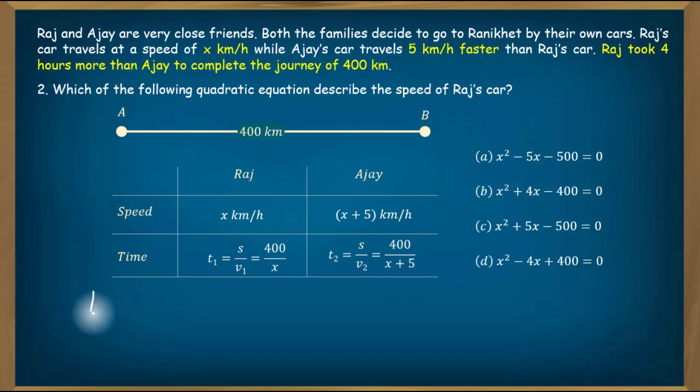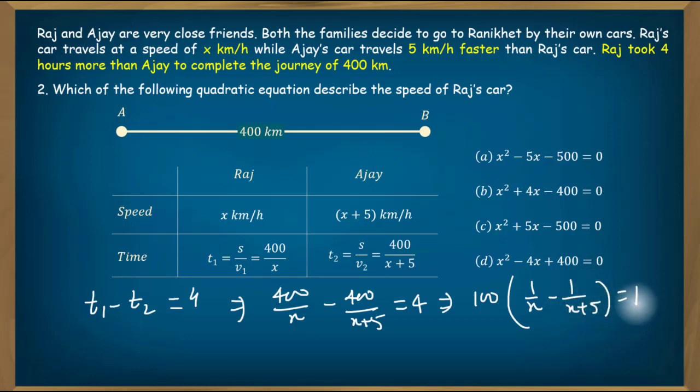The question gives us T1 minus T2 equals 4. This implies 400 upon x minus 400 upon x plus 5 equals 4. Taking 4 on the right side, we get 100 times 1 by x minus 1 by x plus 5 equals 1.